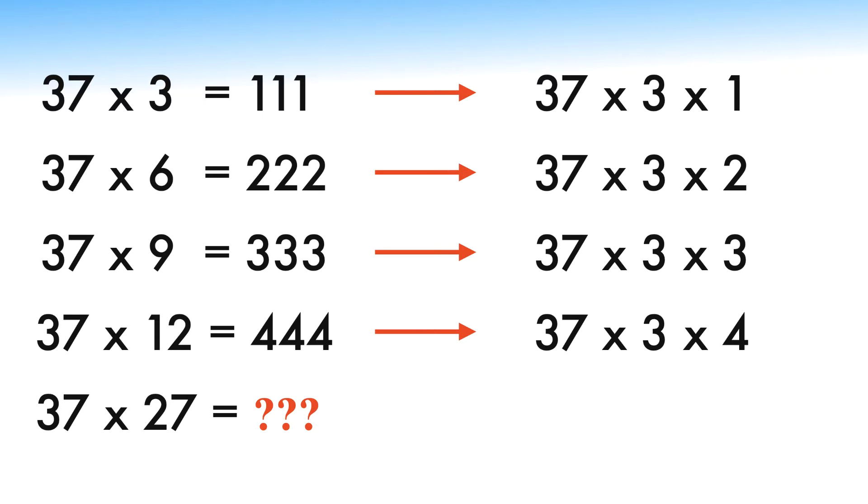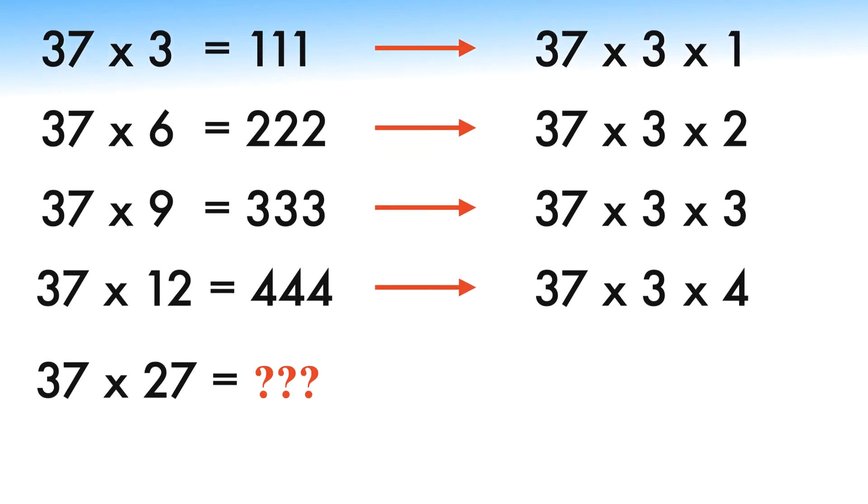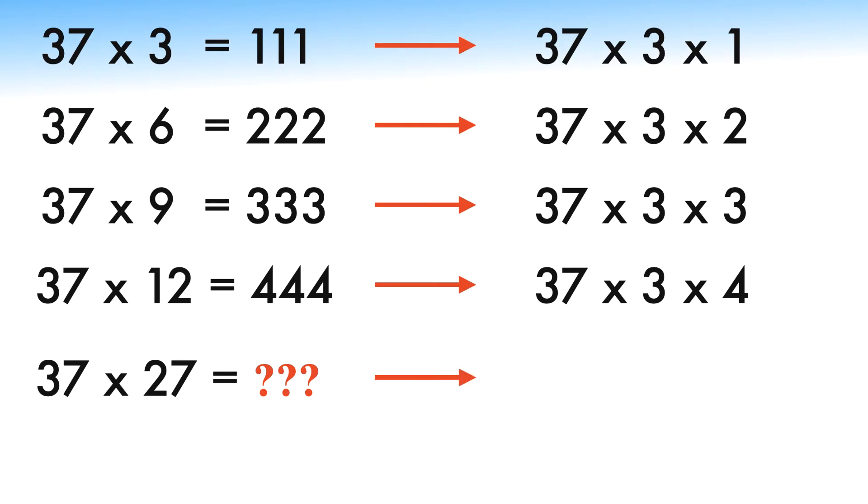Coming back to our question, we need to find 37 times 27. We know that 27 can be written as the product of multiples of 3, which implies 27 equals 3 times 3 times 3. Therefore, 37 times 27 can be modified to 37 times 3 times 3 times 3.